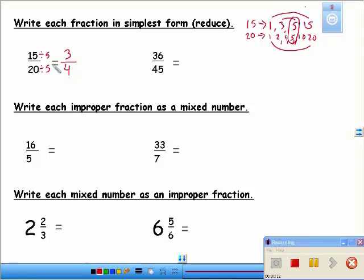Look at this one here: 36/45. What's the greatest common factor? What's the biggest number that goes into both of these numbers?